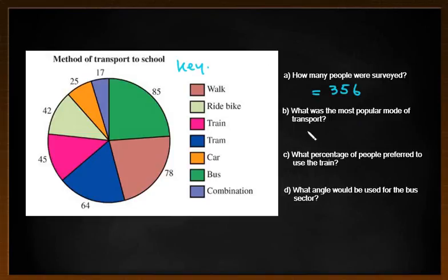What was the most popular mode of transport? Well that again is a pretty straightforward one. We have the green section which is the biggest, the green sector, which means that green is bus. So most students went via the bus.